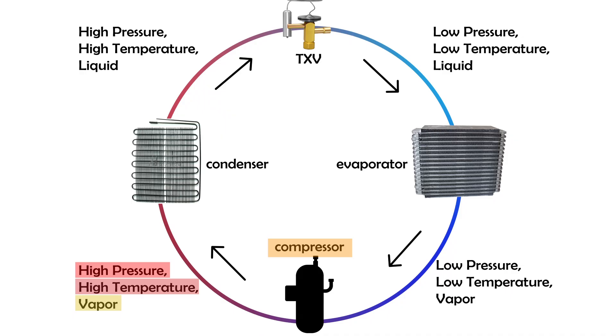The compressor is often called the heart of the system because it keeps the refrigerant moving and boosts its energy level. It's also important to note that this process increases both the pressure and the temperature, preparing the refrigerant to release heat in the next stage.